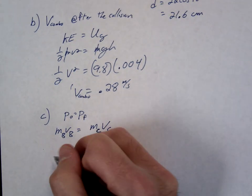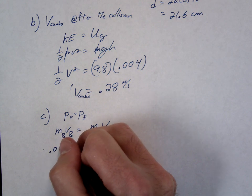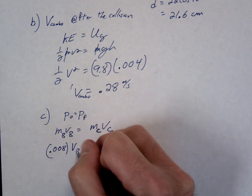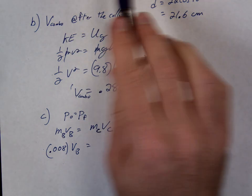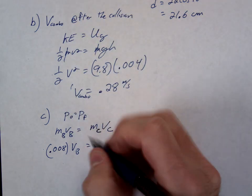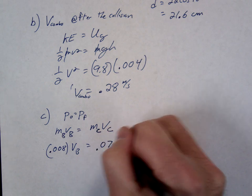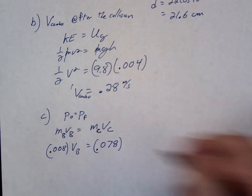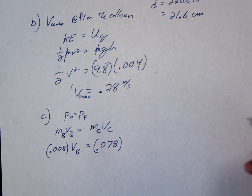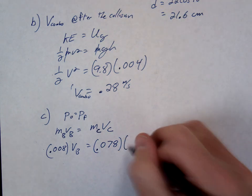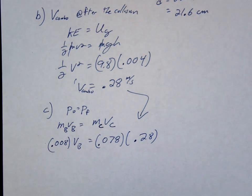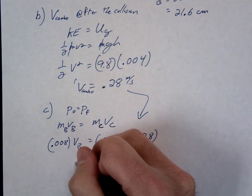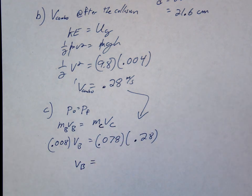So our mass of our bullet was 8 grams, 0.008 VB. The combo mass is the combined mass, right? So 70 plus 8, 0.078. And then the velocity combo that we just found, 0.28. So how fast is our bullet in this case?